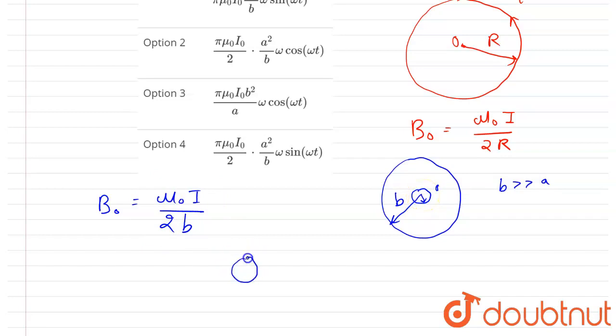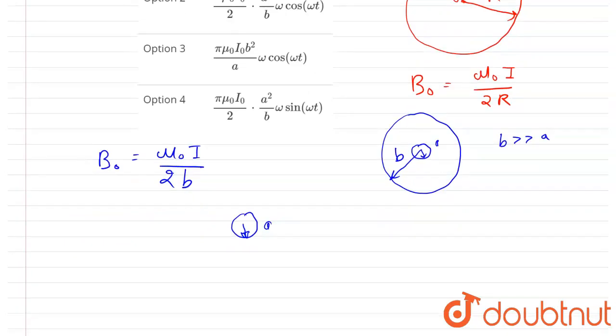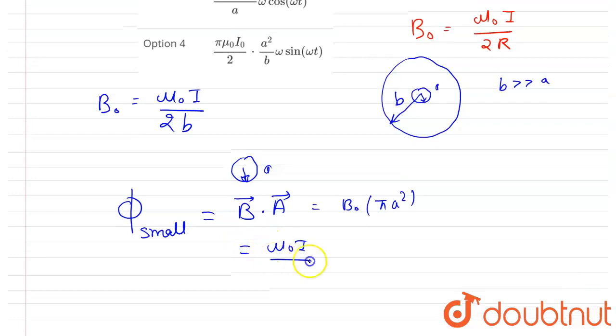So if I draw the smaller circular loop of radius A, through this loop the magnetic field will be the same since A is very, very small. So I can calculate the magnetic flux through the smaller loop is equals to B vector dot A vector. So you can see the magnetic field is this and area vector is co-planar to that. So they both are parallel. So the cosine of 0 degree is 1. So I will just write this into area of smaller loop. So you can put the value of B0 here. So that is mu naught I by 2B into pi A square.